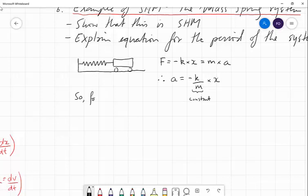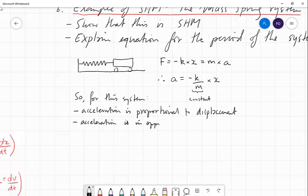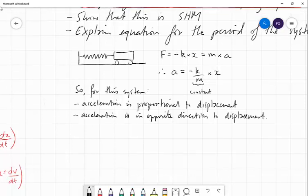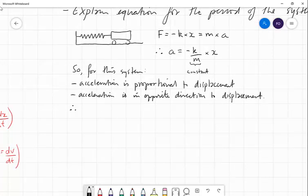So for this system, acceleration is clearly proportional to displacement. What I mean there is that if we double X, then A will clearly also double because this thing here is constant. And acceleration is in opposite direction to displacement. So therefore, those are the two conditions that we require for something to be simple harmonic motion. We can say it is SHM.